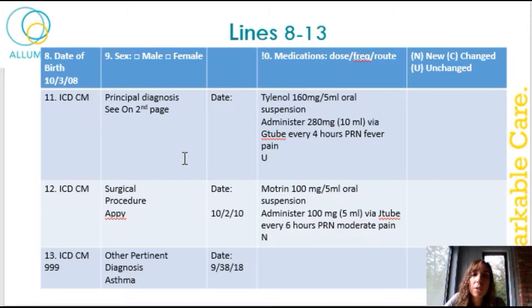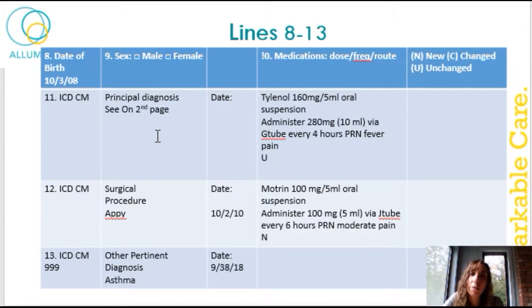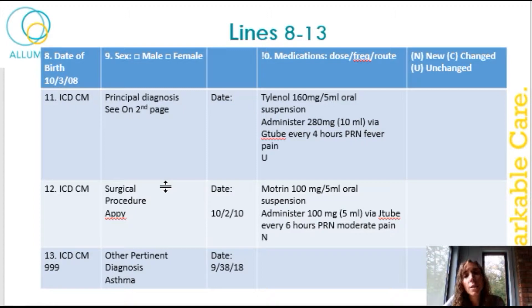Eleven, twelve, and thirteen are the diagnoses that are significant for your patient. Eleven is the primary diagnosis, number twelve is the surgical procedures, and thirteen is other pertinent diagnoses.